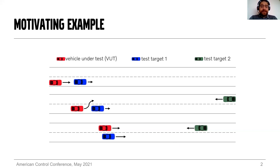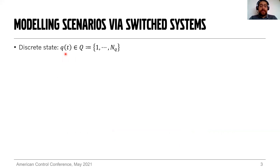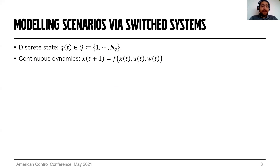How do we model a test scenario through switching systems? A switching system combines discrete and continuous states. The discrete state Q is associated with the operating modes or stages in the scenario and takes value in some set Q, so there are NQ different operating modes. The continuous state X describes the motion of the VUT and the other vehicles, described by some function F. The dynamics of the continuous state depend on the state X, a control input U, and a disturbance W. The disturbance is introduced to model the unknown future motion of the vehicle under test.